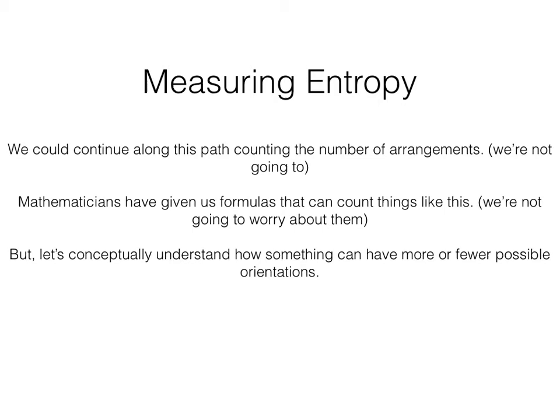We could continue along this path counting the number of arrangements, but we're not going to. Mathematicians have given us formulas that can count things like the number of orientations — we're not going to talk about them. But conceptually, we can understand how something can have more or fewer orientations.